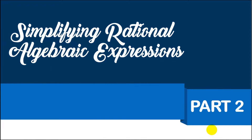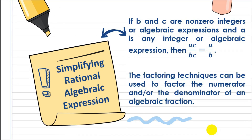The first part of Simplifying RAE is all about those RAEs with monomial numerators and monomial denominators. So, what if we have binomials, trinomials, and other polynomials? The factoring techniques can be used to factor the numerator and/or the denominator of an algebraic expression. We will go back and use factoring techniques to simplify our Rational Algebraic Expression.